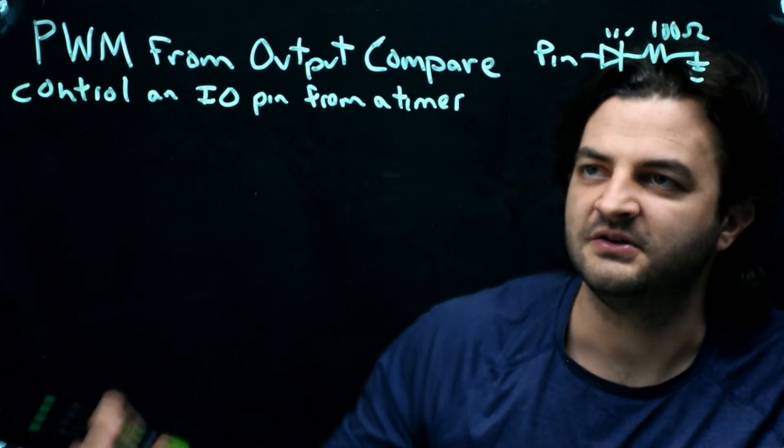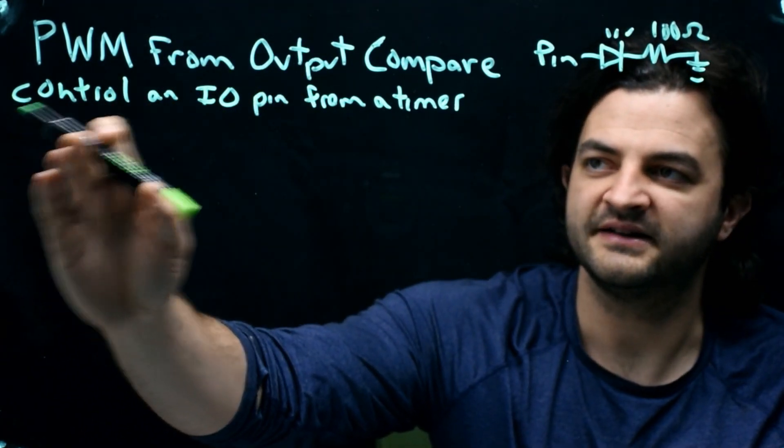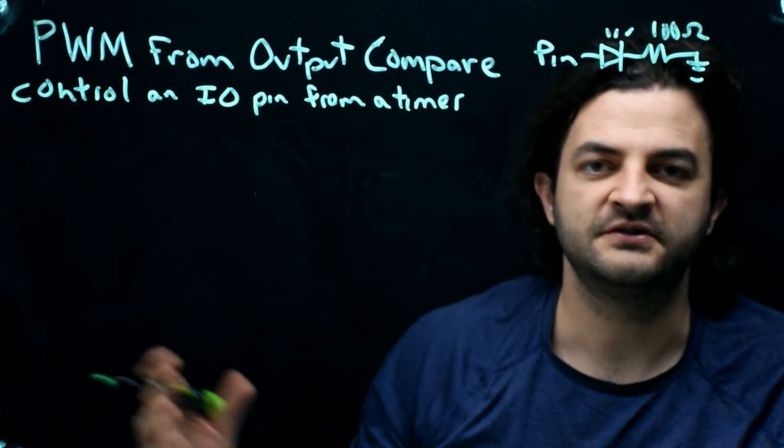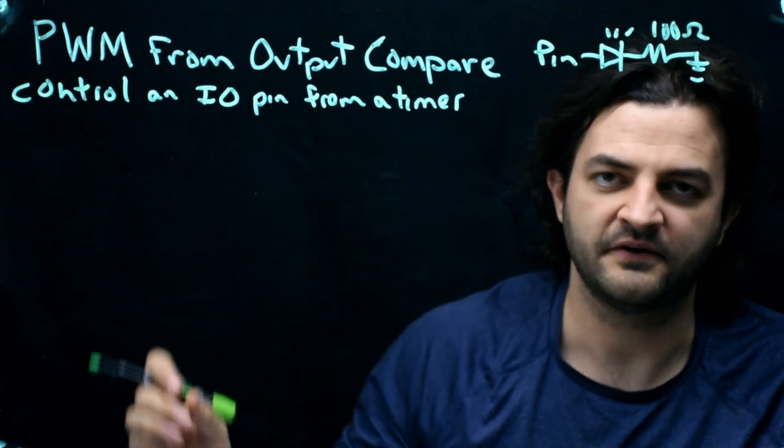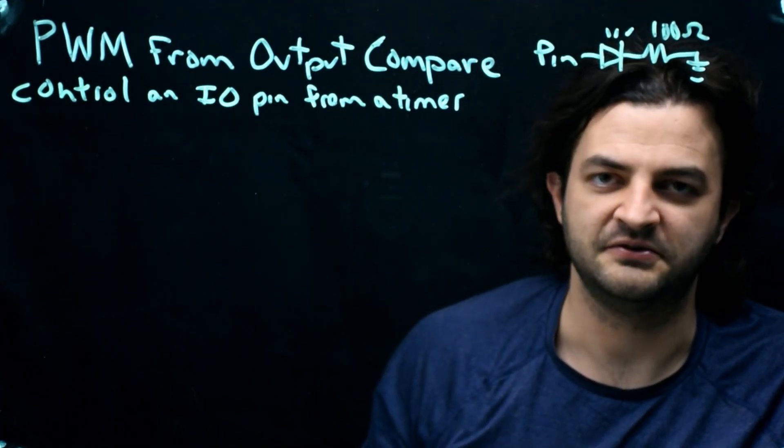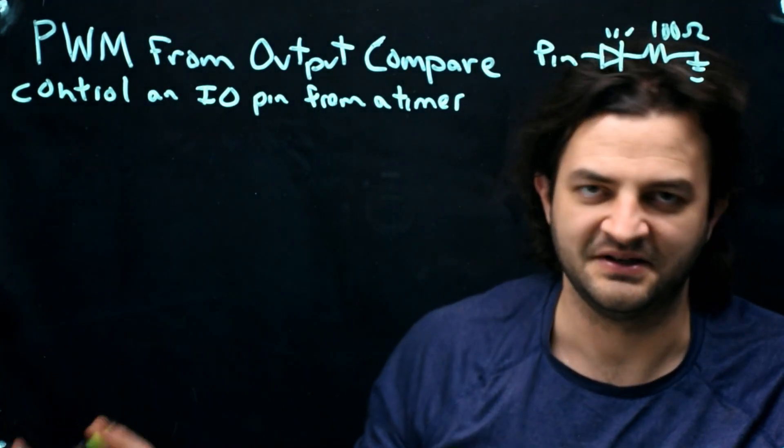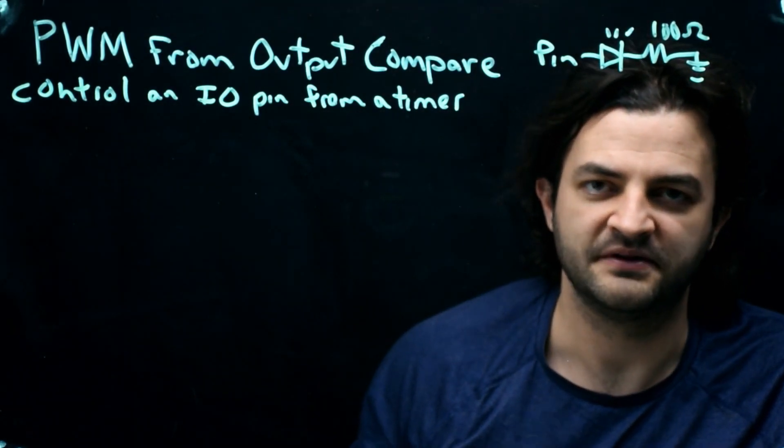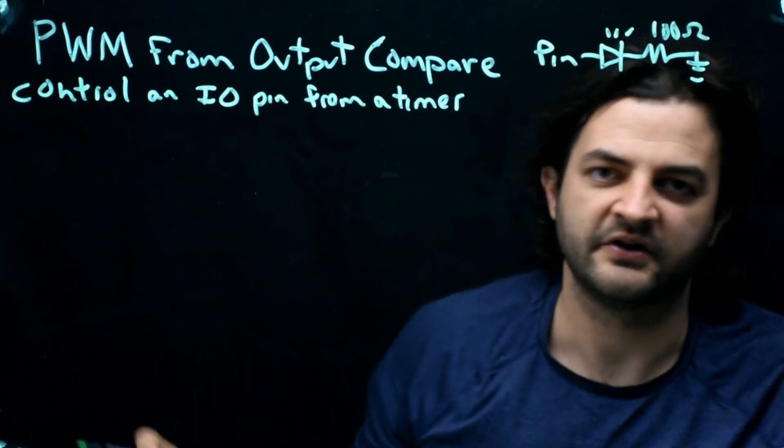So instead, we can use output compare as a set and forget. Let's turn this pin on and off automatically using the state of the timer. Once you set the relative on and off amount of time, you no longer have to sit there in a for loop and check the pin and check the timer and do things like that. Set it once and it continues to output this square wave, setting the brightness of our LED forever.